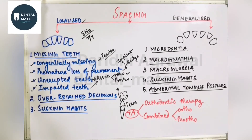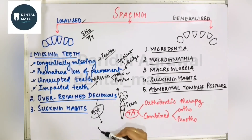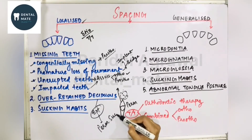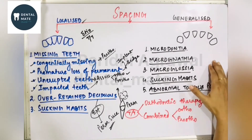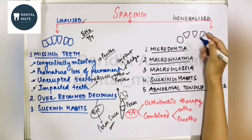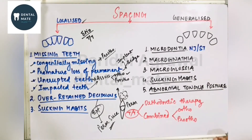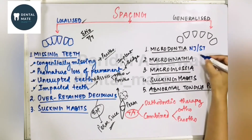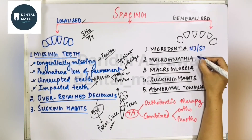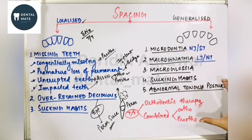Next is generalized spacing. The various causes include: microdontia — where the jaw is of normal size (NJ) but the teeth are small (ST); and macrognathia — where there is a large jaw (LJ) but normal tooth size (NT). In microdontia, spacing is visible because the small teeth do not fill the normal-sized jaw. In macrognathia, since the jaw is larger, spacing appears between the normal-sized teeth.